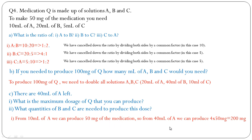So from 40 ml of A we can produce 4 multiplied by 50 mg, that is 200 mg. From 40 ml of A we need 80 ml of B and 20 ml of C.